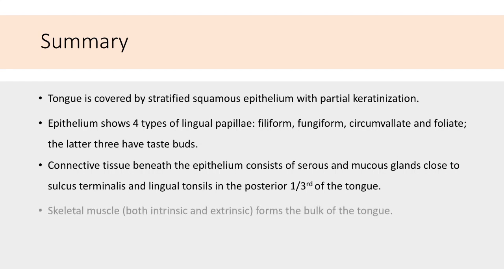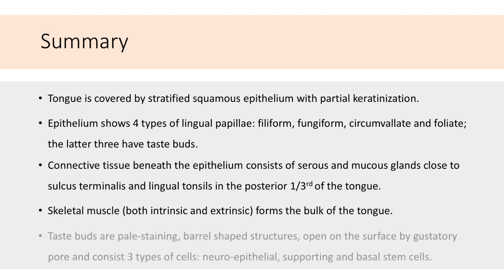Skeletal muscles of both intrinsic and extrinsic variety form the bulk of the tongue. Taste buds are present on the fungiform, circumvallate, and foliate papillae, and also on the posterior one-third of the tongue. They are pale-staining, barrel-shaped structures which open to the surface by a gustatory pore and consist of three types of cells: neuroepithelial sensory cells, supporting cells, and basal stem cells.